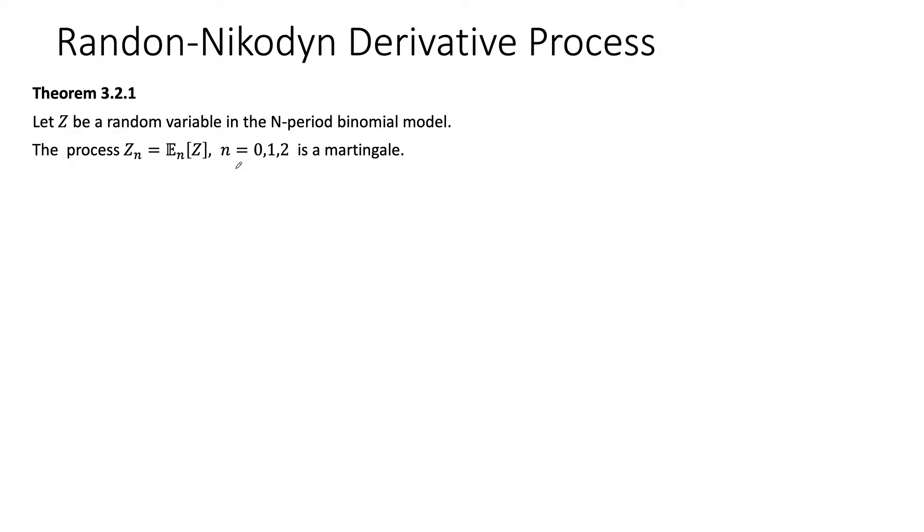Now, this Z could be any random variable that we can think of. But in particular, if this Z is actually the Randon-Nikodym derivative, then we call this Z_n the Randon-Nikodym derivative process. And then similarly, we can talk about state price process density, which is basically the same definition as a normal state price density function, but instead of Z at the numerator, we put Z_n. And that's it.